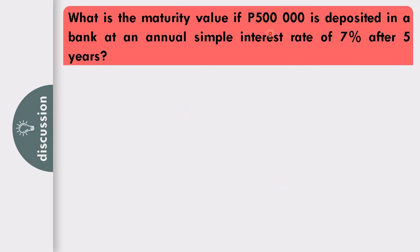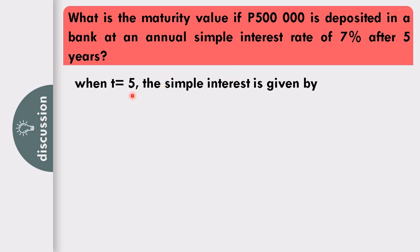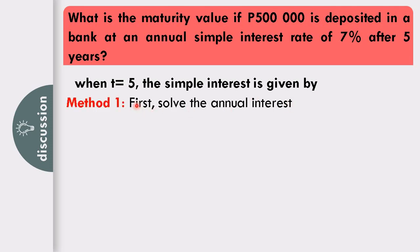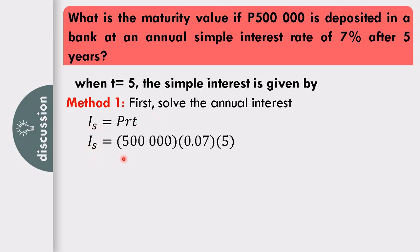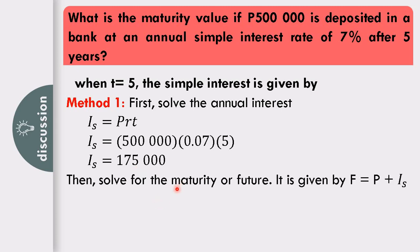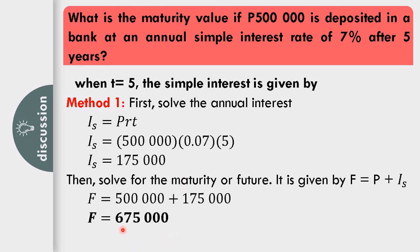What is the maturity value if P500,000 is deposited in a bank at an annual simple interest rate of 7% after 5 years? Method 1: first solve for annual interest using I sub S equals PRT. I sub S equals 500,000 times 0.07 times 5, giving I sub S equals P175,000. Then find the maturity value: F equals P plus I sub S equals 500,000 plus 175,000, so F equals P675,000.